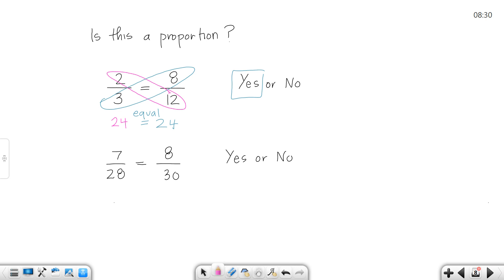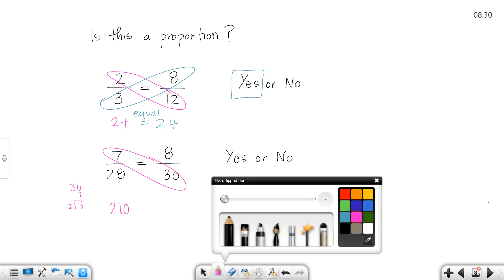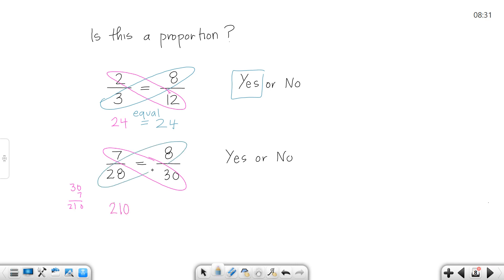Let's try the second one. If I multiply this part out, I get 30 times 7, which is 210. If I multiply this part out, I get 28 times 8, which is 224. What I say about these two is that they're not equal. Since those two products are not equal, that would be an answer of no.